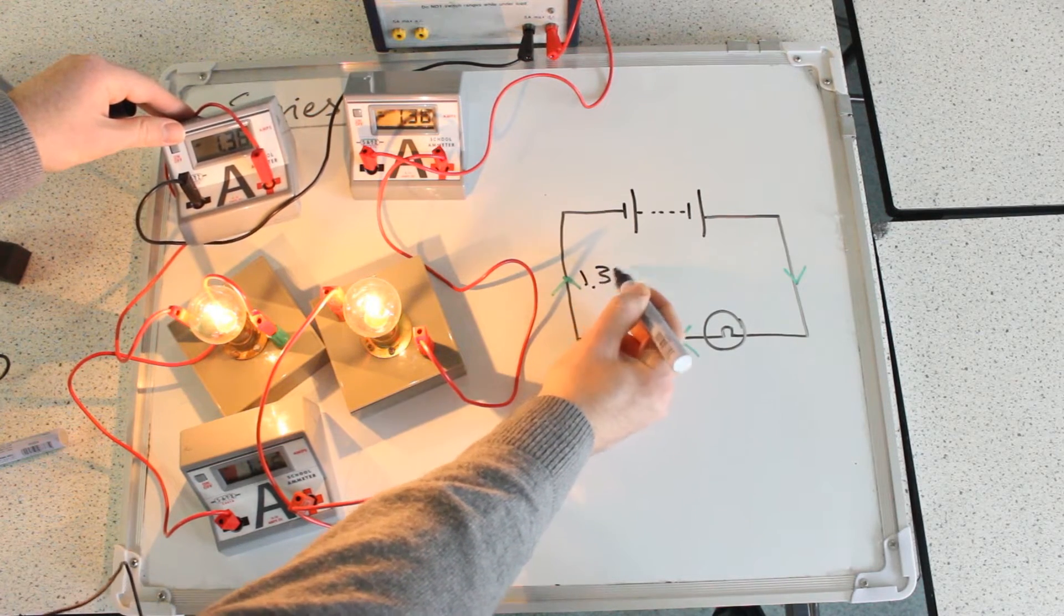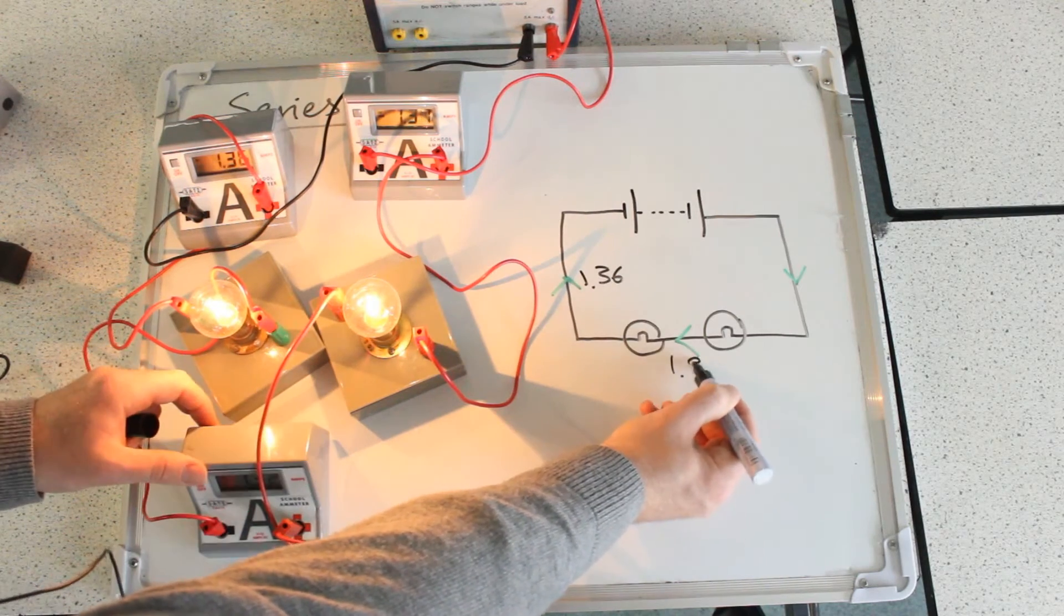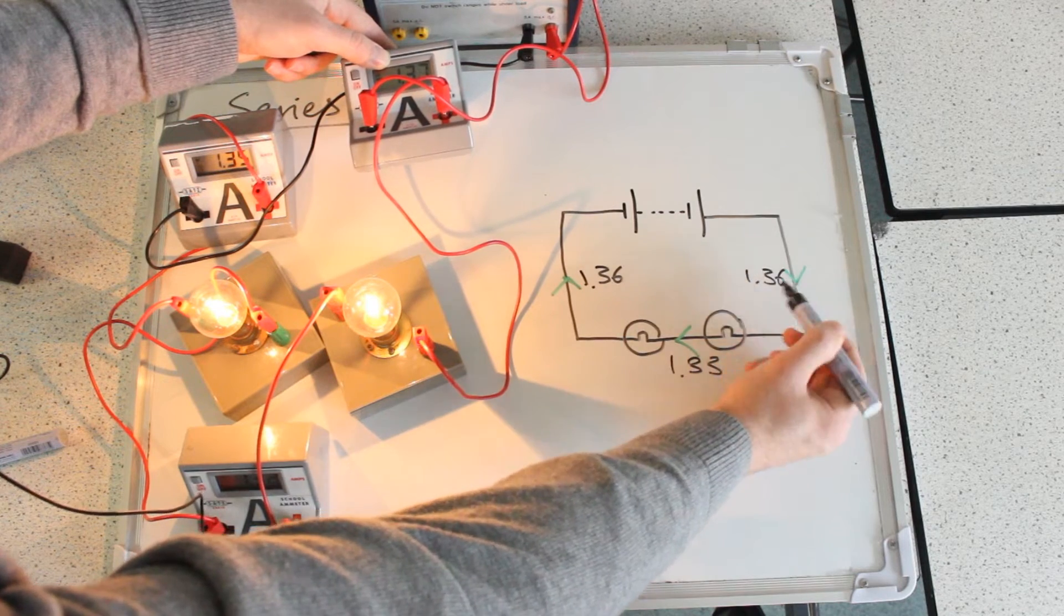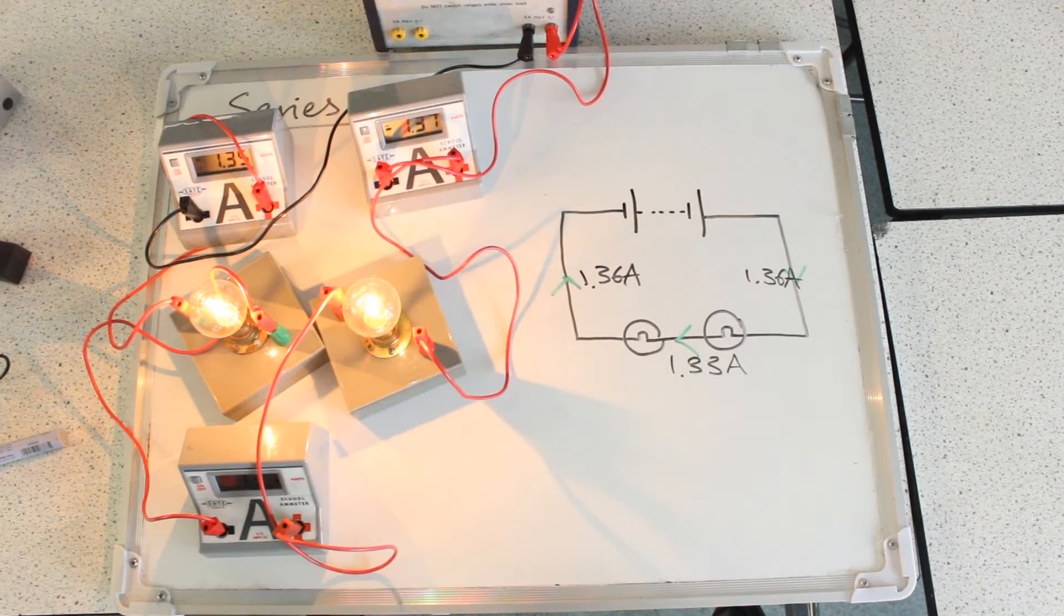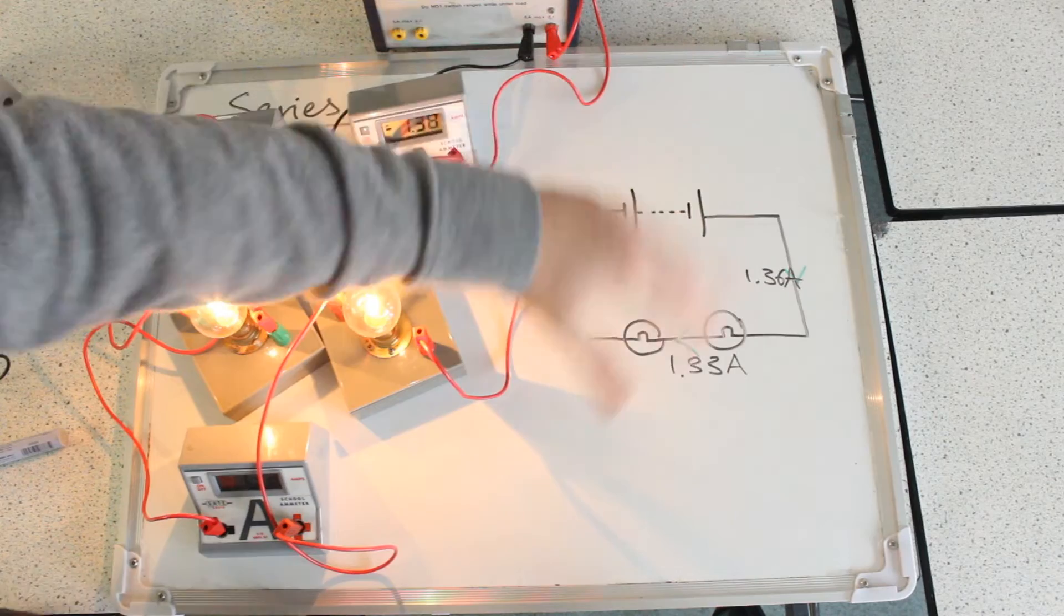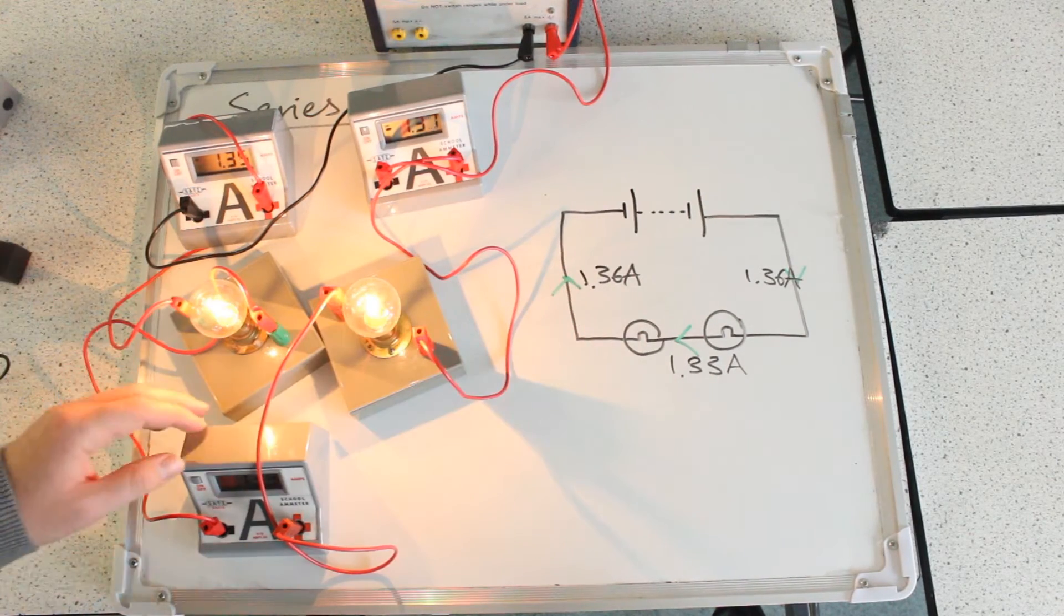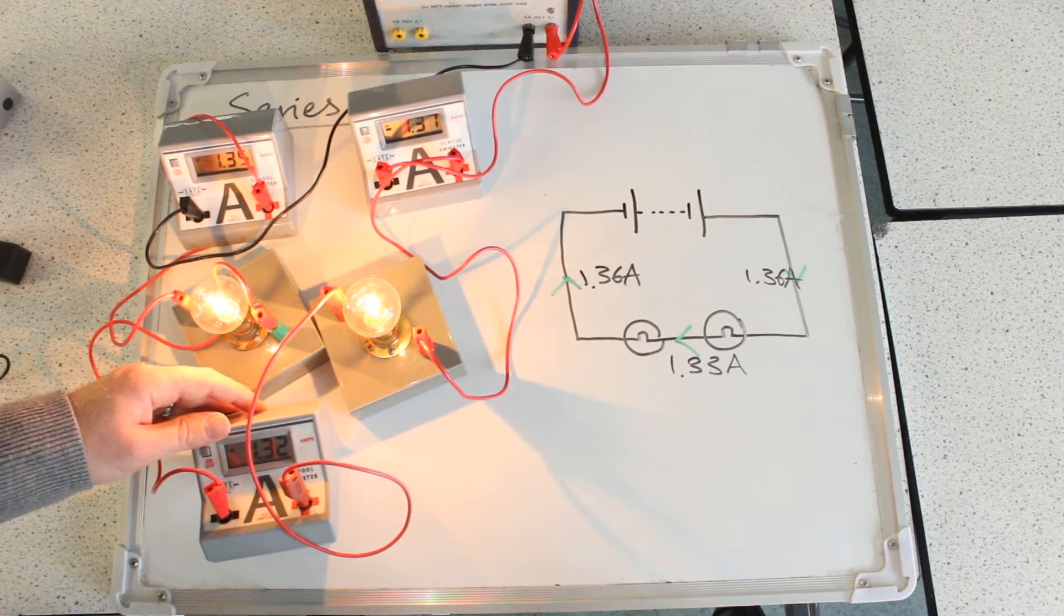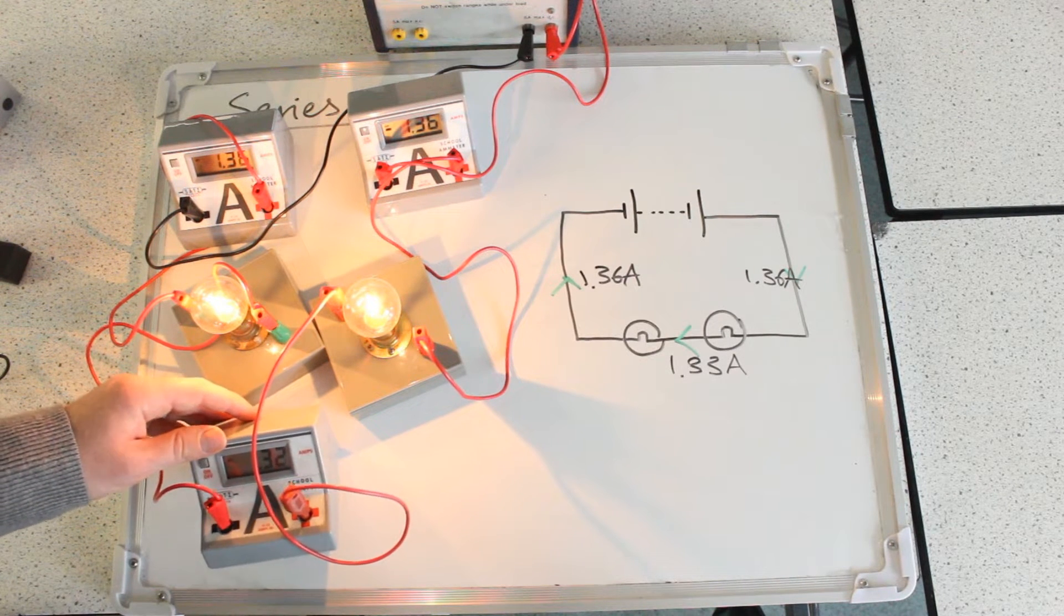So I'm going to put those values on my circuit diagram: 1.36, 1.33, and 1.36, and they're all in amps. Now it does start to look a bit confusing as soon as you start adding meters because you lose that nice rectangular grid there, so it's very useful to work with your circuit diagram next to your circuits. Now you can see they're all the same. So the rule we learn for series loops is that the current is always equal at every point in that series loop.